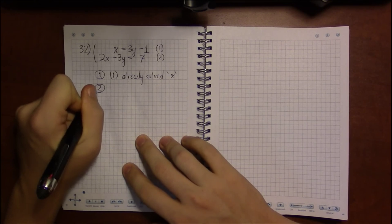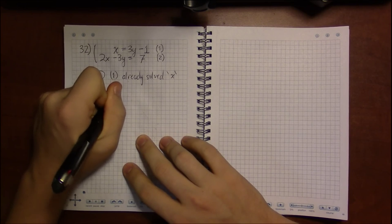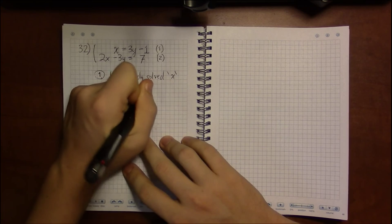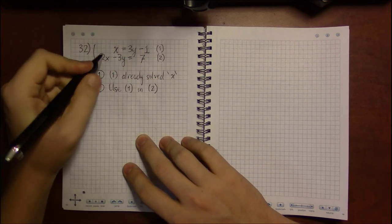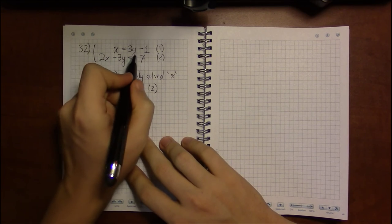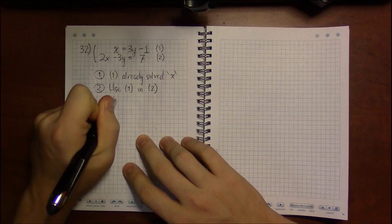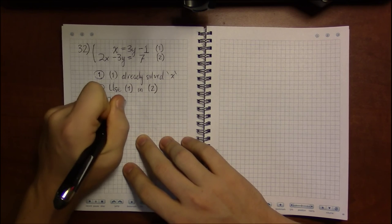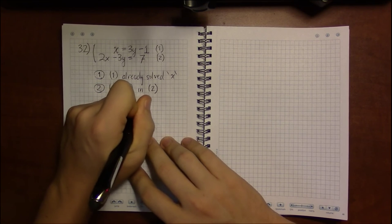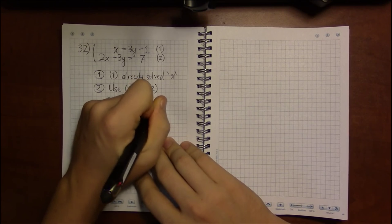And in step 2, we'll use equation 1 in equation 2, our unused equation, if you will, and replace x in equation 2 with 3y minus 1. So we get 2 times (3y minus 1), then we'll subtract 3y, and this should get us 7.